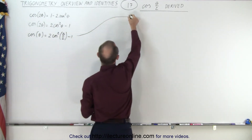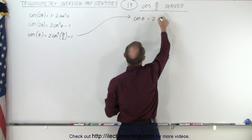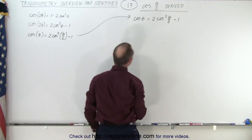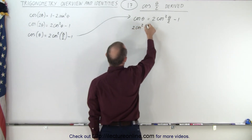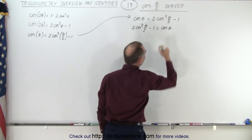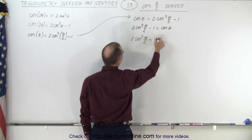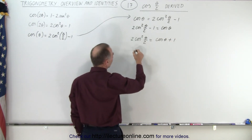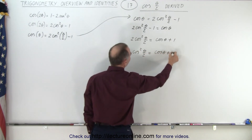Using this equation, we can write that the cosine of theta is equal to 2 times the cosine squared of theta divided by 2, minus 1. Turning the equation around, this becomes 2 times the cosine squared of theta over 2, minus 1, equals the cosine of theta. Moving the 1 across gives us 2 times the cosine squared of theta over 2 equals the cosine of theta plus 1. Dividing both sides by 2, we get the cosine squared of theta over 2 equals the cosine of theta plus 1, all over 2.